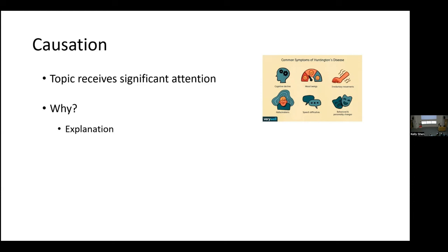A second reason for our interest in causation: prediction. If you know that a factor is the cause of some outcome — a main cause, a stable cause — you can often use that causal factor to predict its occurrence. If we know that this trinucleotide repeat is a main cause of Huntington's disease, we can use the identification of this in patients to predict their likelihood of getting the disease.